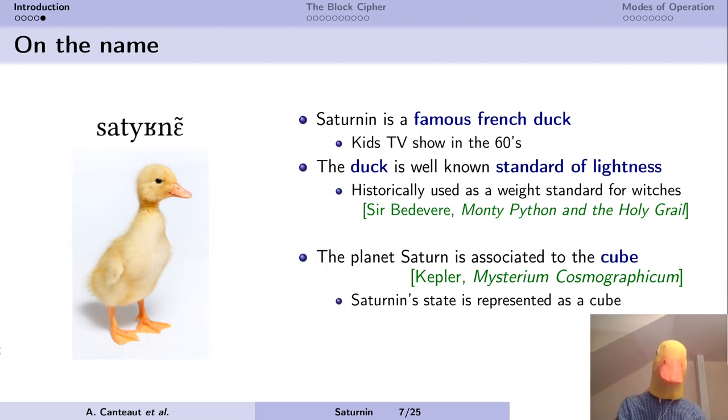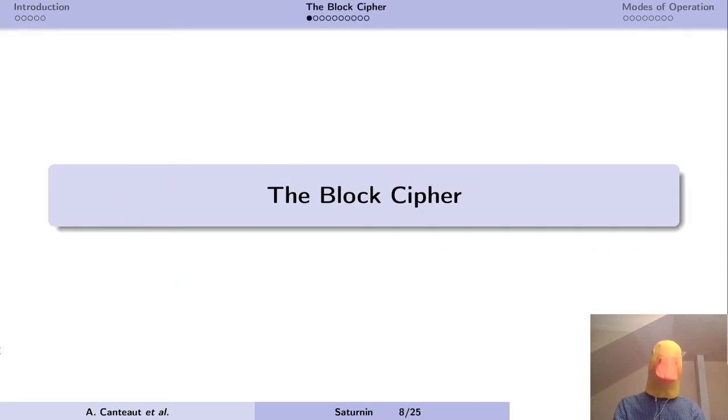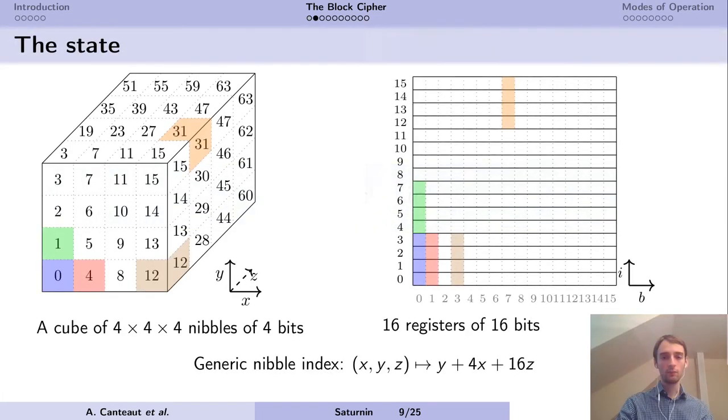Let's have a look at the specification of the block cipher, and especially this cube state. The state of Saturnin is represented as a cube, 4x4x4 nibbles of 4 bits, and there is an equivalent representation as 16 registers of 16 bits. The main thing to know is that the column in the cube is going to correspond to one bit of each register.